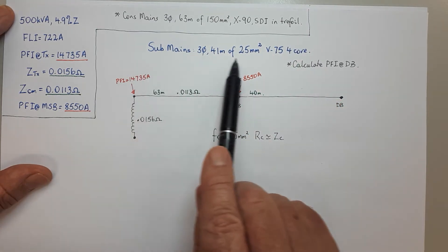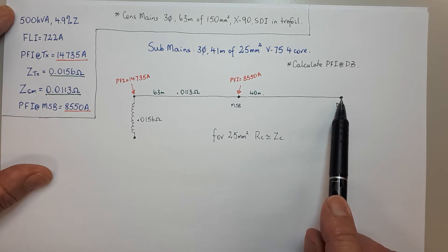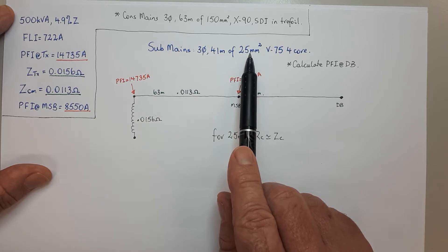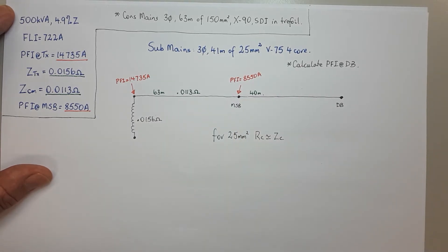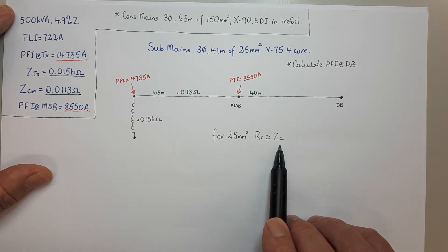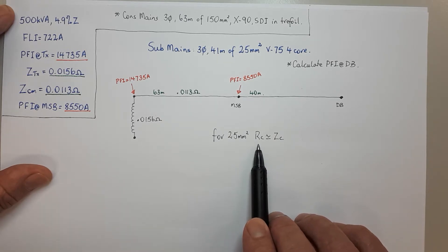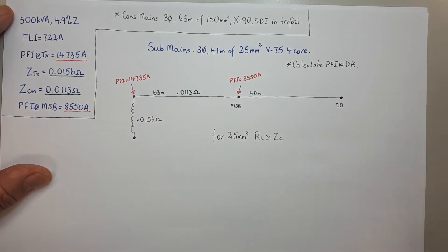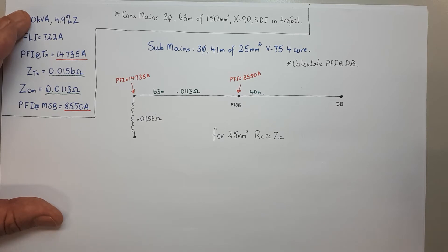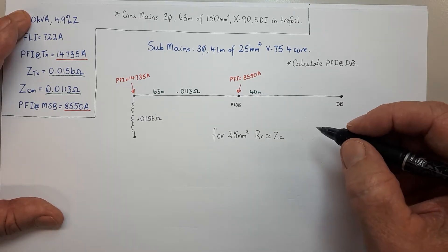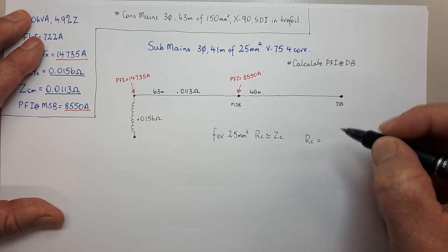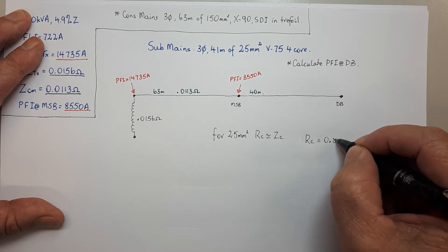Now what we're going to do is run a sub-main from the main switchboard out to a DB. It's 25mm squared. Now what we say about 25mm squared — for any cable less than 120 — we use this. If we want to work out the impedance, it's close enough to the resistance, so we don't worry about the reactance. It's a lot of mucking around for not enough gain, so we just use the resistance of the cable. From AS/NZS 3008, the RC for 25mm² is 0.884 ohms per kilometre.